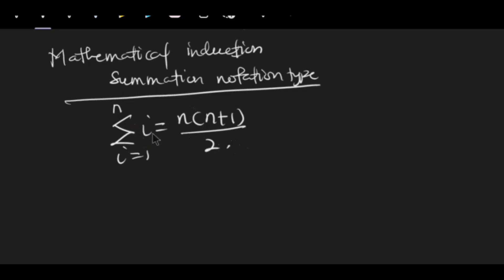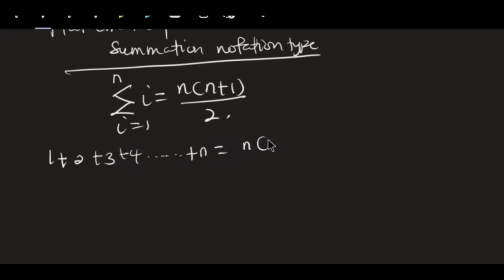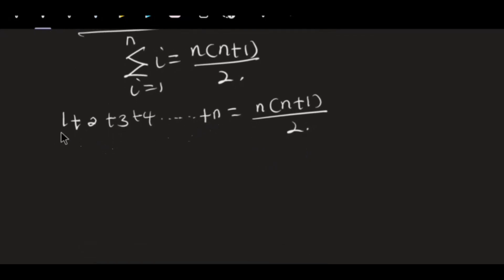I'm going to show you how we tackle the summation notation in mathematical induction. In every summation you are just summing numbers from the minimum point to the maximum point. So you are summing from one to n: one plus two plus three plus four up to any n, and this is equal to n times n plus one all over two. We have now broken it down to the series for which you can apply mathematical induction easily.